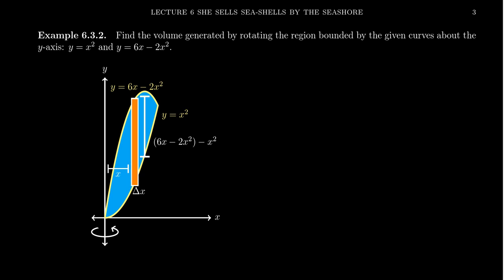We're going to take the curve y equals x squared, which is the lower curve in our picture right here. And then the other curve is y equals 6x minus 2x squared, which is this upper curve you see right here. And again, we want to rotate this around the y-axis.